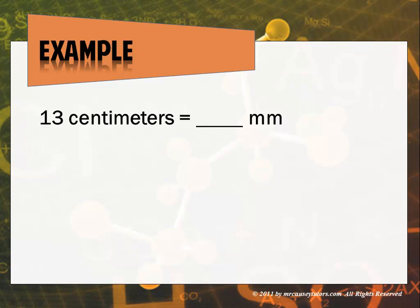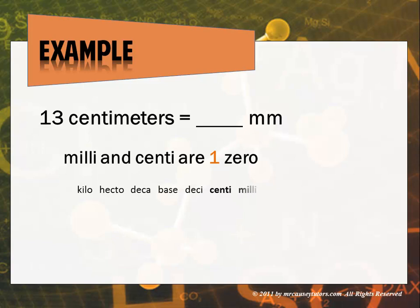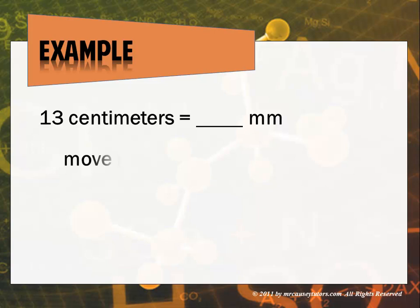13 centimeters equals how many millimeters? It's large to small, so I know I'm going to multiply, and I'm going to move to the right. How many times? Well, milli and centi are only one place value apart, or one zero. So, if you look at our chart here, I'm going to move it one time. And I'm going to move it to the right.